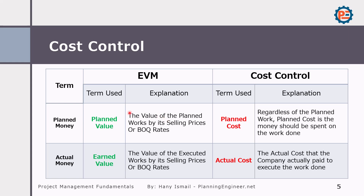What are the differences between planned value and planned cost? Planned value is the value of the planned works by its selling price or the BOQ rates — so this is the expected amount you are going to claim in your invoice. While planned cost, regardless of the planned work, is the money that should be spent on the work done or the executed work. You executed a certain scope of work and you should spend this money — this is what is called planned cost.